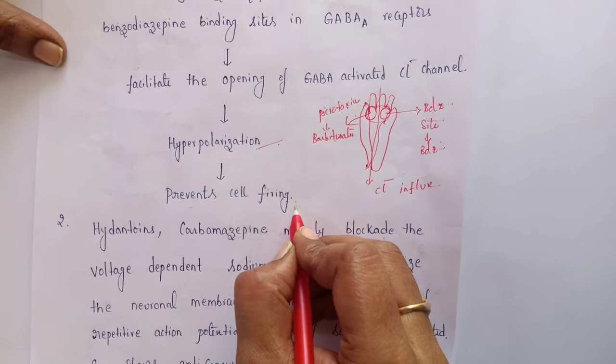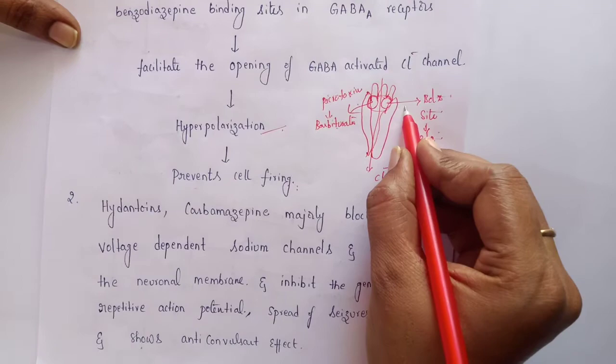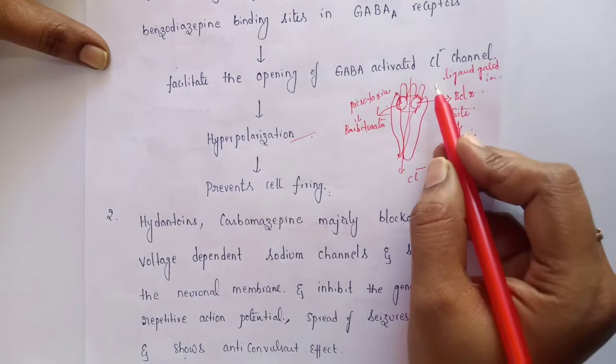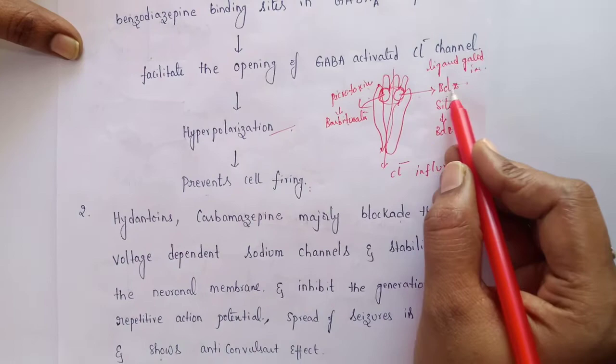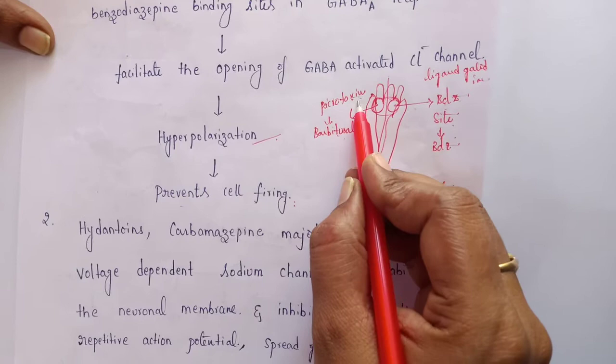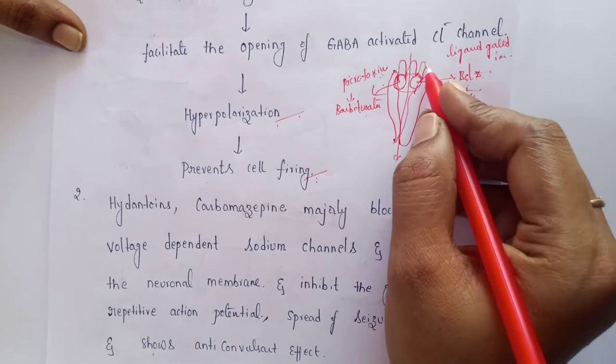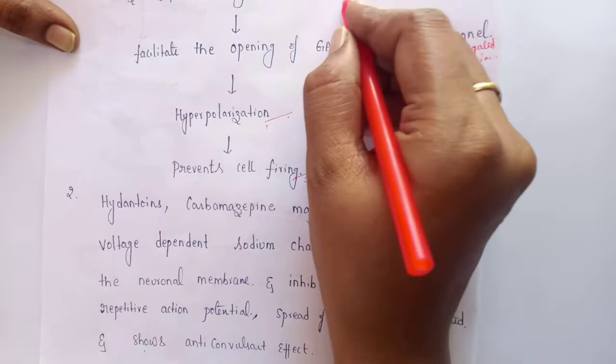In summary, barbiturates and benzodiazepines act on the GABA-A receptor, a pentameric ligand-gated ion channel. Barbiturates bind to the picrotoxin binding site and open the channel, causing chloride ion influx, hyperpolarization, and prevention of neuron firing. Similarly, benzodiazepines bind to the benzodiazepine binding site on GABA-A receptors to produce the same effect.